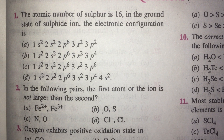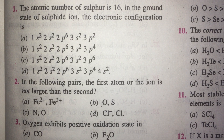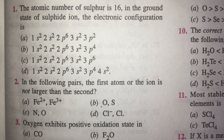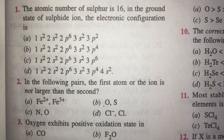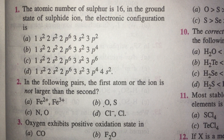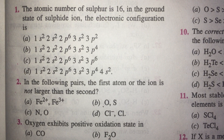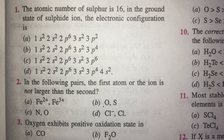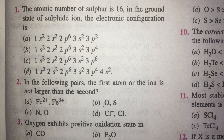In the following, the first atom or ion is not larger than the second — meaning the first must be smaller. So A is a wrong option. B is definitely correct because oxygen is smaller than sulfur — down a group, sizes increase. C is wrong, D is also wrong.